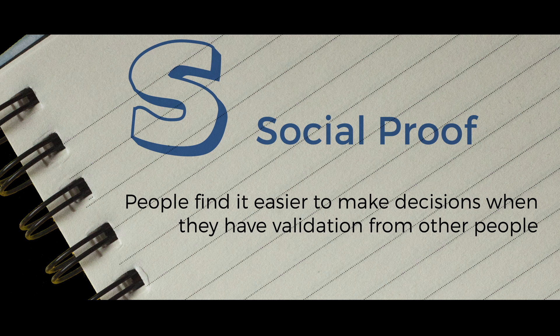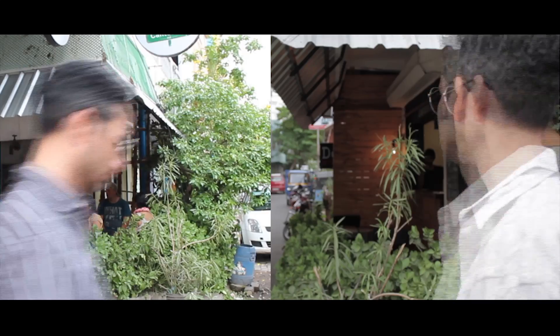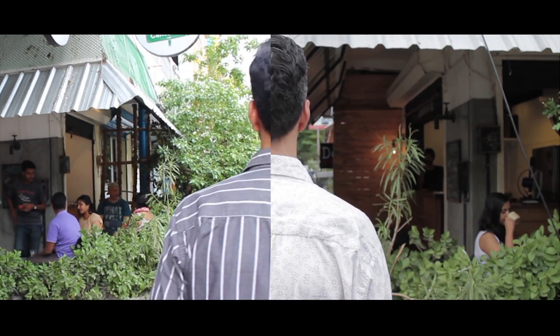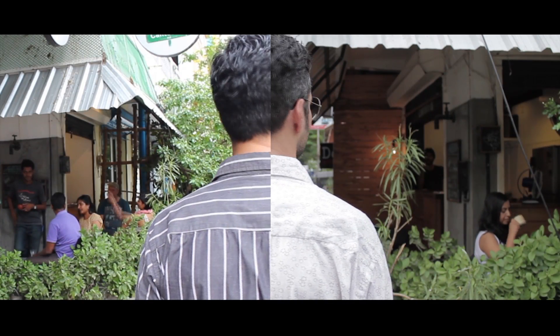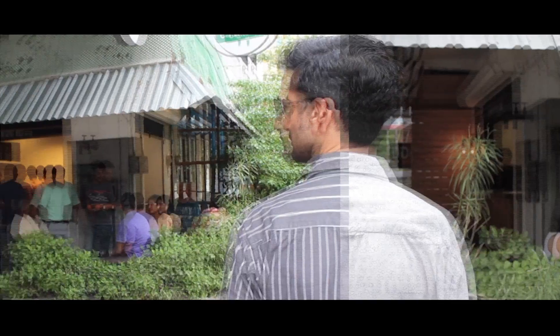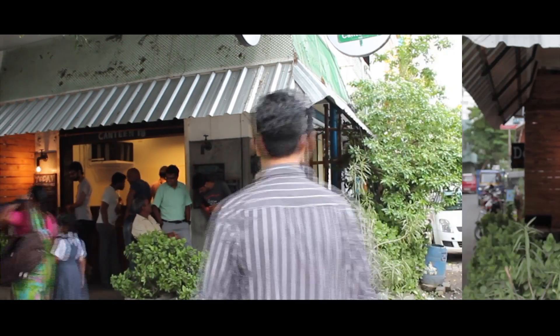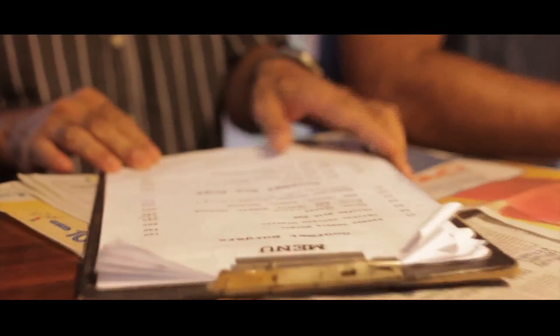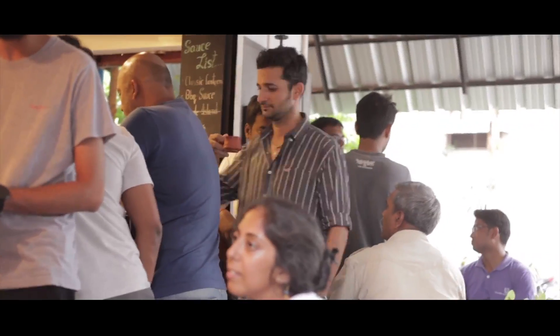S for social proof. The principle of social proof tells us that in moments of uncertainty, people get influenced by the actions and opinions of others. For example, as compared to an empty cafe, a crowded cafe is perceived as the better option. Here the crowd validates the cafe as a successful one.